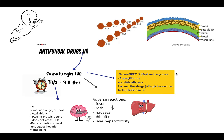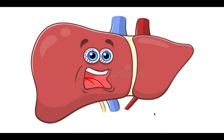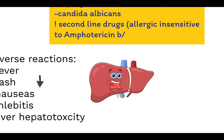Caspofungin has a very narrow spectrum, only covering two main echinocandins — aspergillosis and Candida albicans. It is clinically used as a second-line drug in aspergillosis or candidiasis, and is sometimes given to patients who are allergic or insensitive to Amphotericin B and itraconazole. The adverse reactions include fever, rash, nausea, and phlebitis. The main one to remember is hepatotoxicity — Caspofungin causes liver hepatotoxicity.